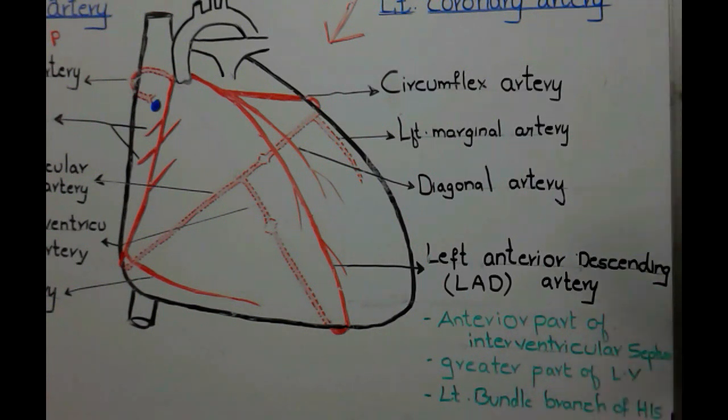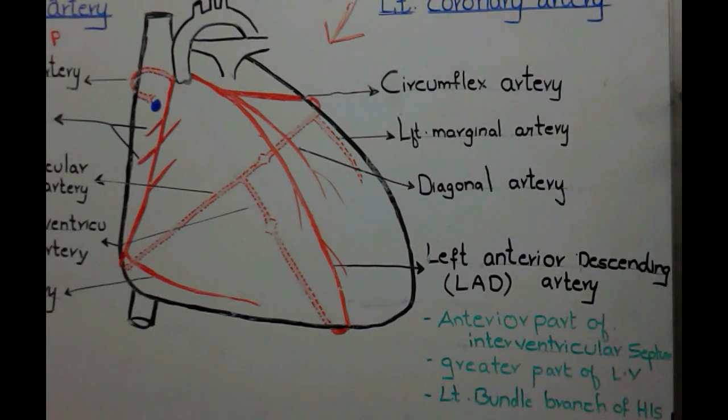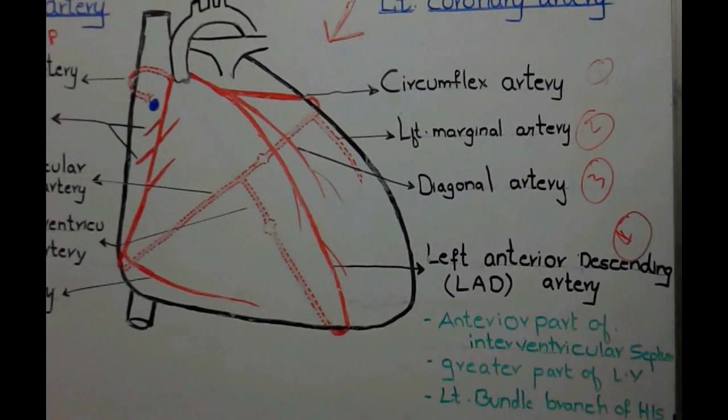This is the total course and branches of left coronary arteries. So in left coronary artery, we have total four main branches.